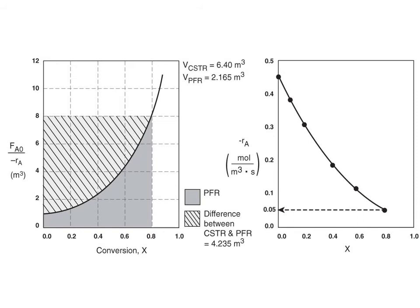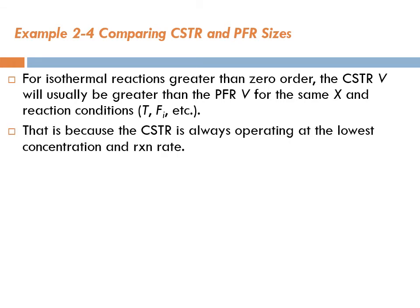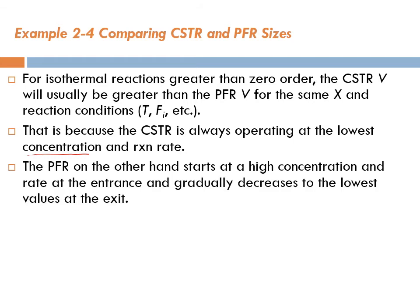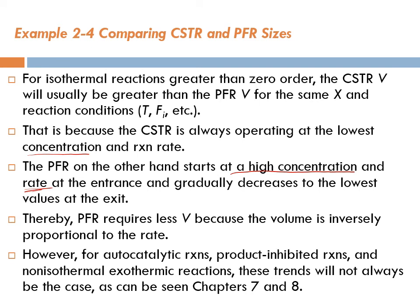For isothermal reactions greater than zero order, the CSTR volume will usually be greater than the plug-flow reactor volume for the same conversion and reaction conditions. That is because the CSTR is always operating at the lowest concentration and therefore the lowest rate of reaction. The plug-flow reactor, on the other hand, starts at high concentration and high rate at the entrance and gradually decreases to the lowest values at the exit — thereby requiring less volume, because volume is inversely proportional to rate.